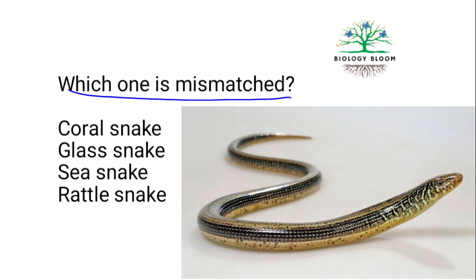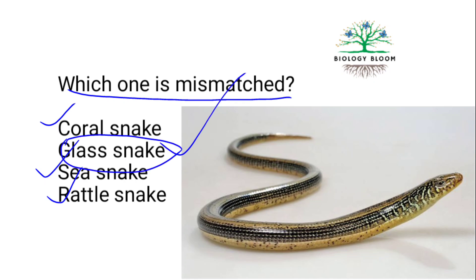Next: which one is mismatched — real snake vs. false snake? Coral snake is a real snake, sea snake is a real snake, rattlesnake is a real snake. Glass snake is mismatched — glass snake is basically not a snake; it is a legless lizard belonging to Reptilia. Just like silverfish is not a fish but an insect.